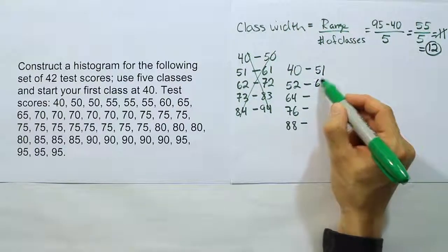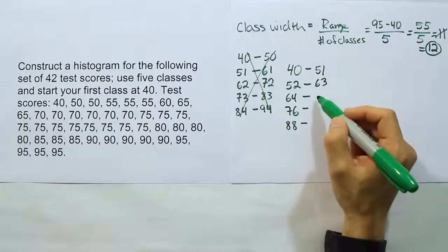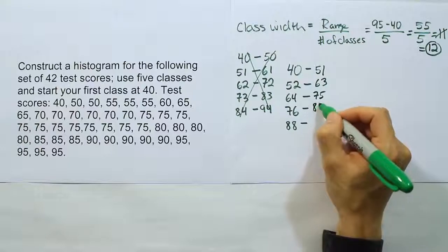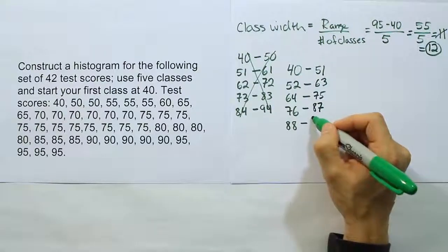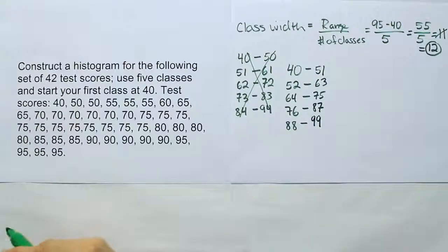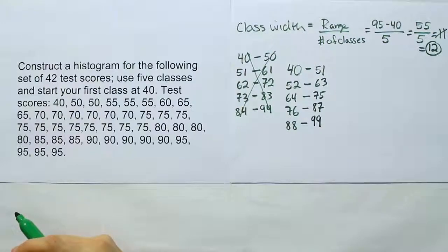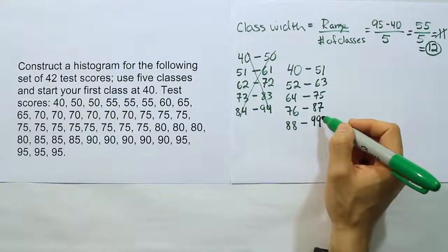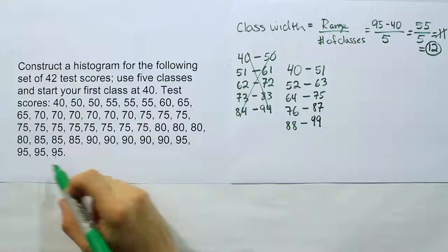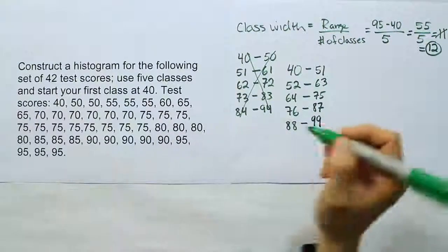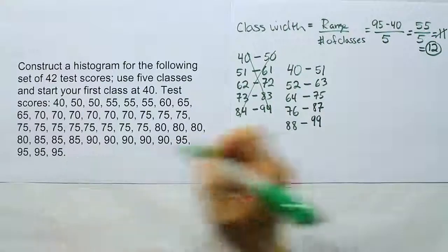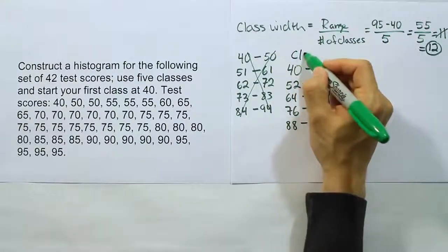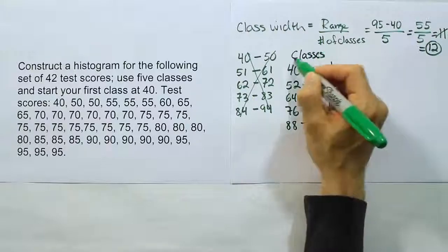Then we'll add 12 to that, we'll get 63. Add 12 to that, we'll get 75. Add 12 to that, you'll get 87. Add 12 to that, and you will get 99. There are your five categories. The last category ends at 99, which means it will accommodate the 95s that we have in our data set. So the last category does indeed fit our largest value. We can call these our classes.